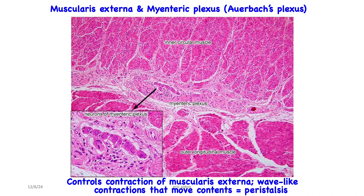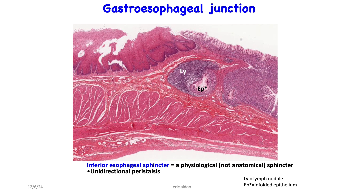Embedded within the muscularis externa are the myenteric plexuses, also known as Auerbach's plexuses, which help in contraction and relaxation of the muscle to facilitate peristalsis. The wave-like contractions move the bolus down to the stomach. At the gastroesophageal junction the inner circular muscle is enhanced to form a sphincter. In the micrograph you can see the large muscle mass at the junction, with the oesophageal portion showing stratified epithelium on one side and the columnar epithelium of the stomach on the other.